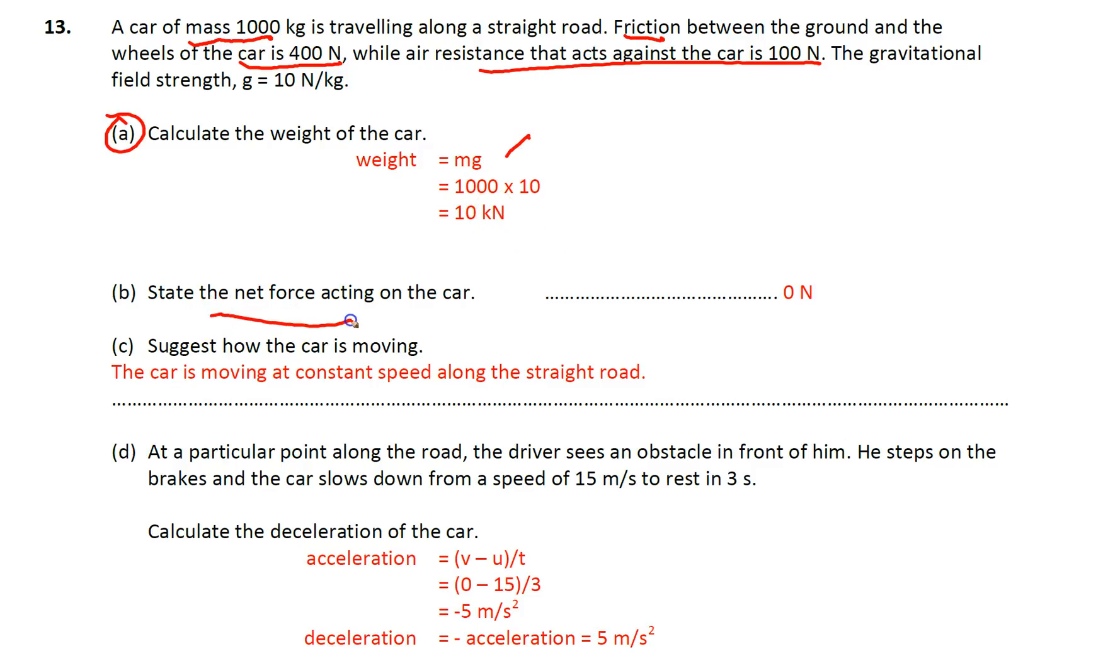And secondly, state the net force acting on the car. Okay, so the net force is 0. Why? Because right over here, you can see that the car itself is actually traveling at a constant speed.